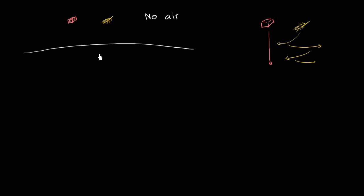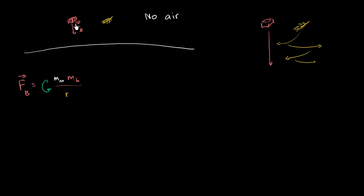Your first temptation would be to use the universal law of gravity. The force of gravity on the brick is going to be equal to big G times the mass of the moon times the mass of the brick, divided by the distance between the brick and the center of the moon squared. That's the force on the brick.